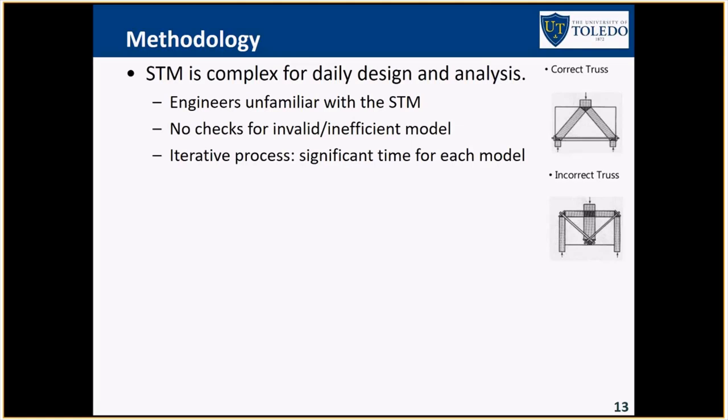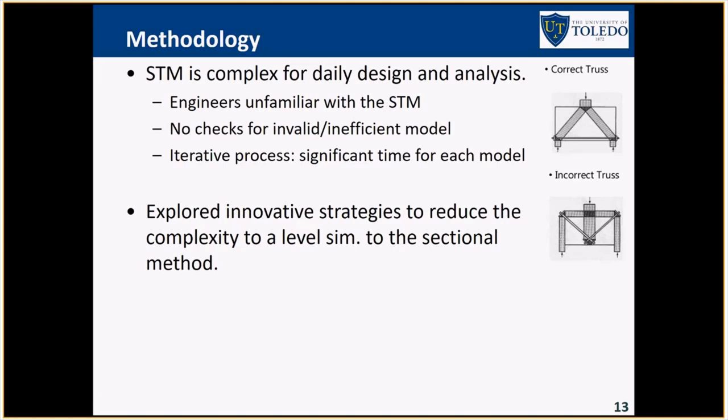So there's no check. If you create a wrong model, you cannot really check whether it's right or wrong. So there's a bit of a conceptual model development, which is making it a bit complex. And also it's an iterative process. You develop a graphical model, you solve it, and it is never a single step process. At least it takes two times refinement or maybe three times refinement if you really want to get a very good efficient model. So these are the complexities. And in this study, we try to explore innovative strategies to automate this, to create a model which is right for all applications. So this is only for one type of structure. And we know what model is most efficient. And reduce the complexity to a level which is similar to the sectional method.